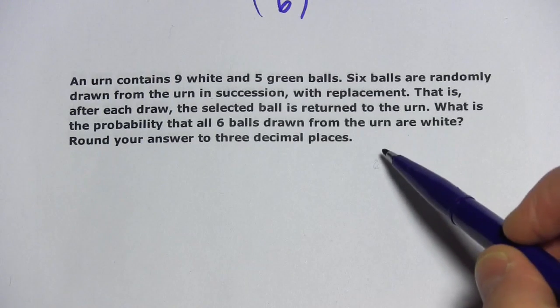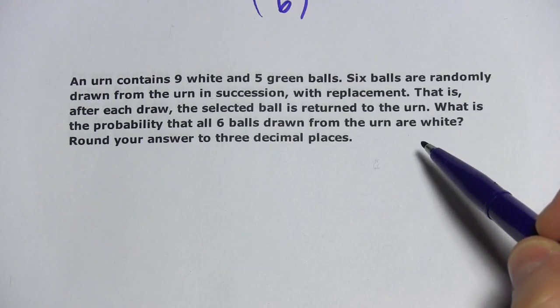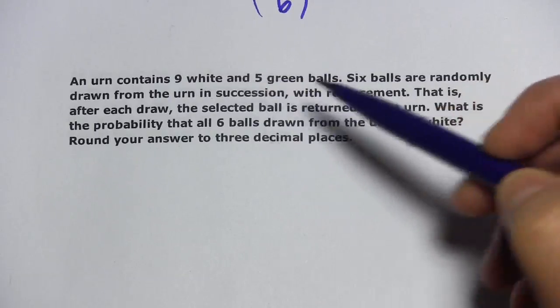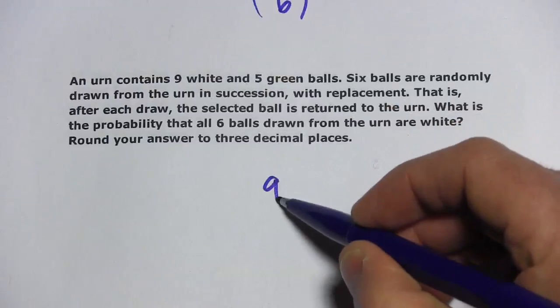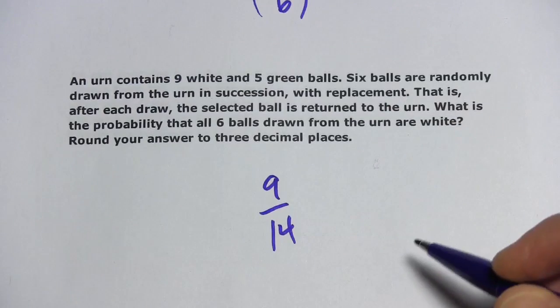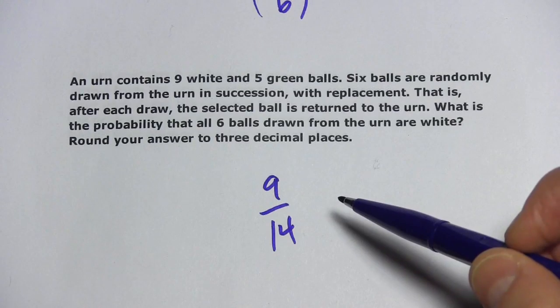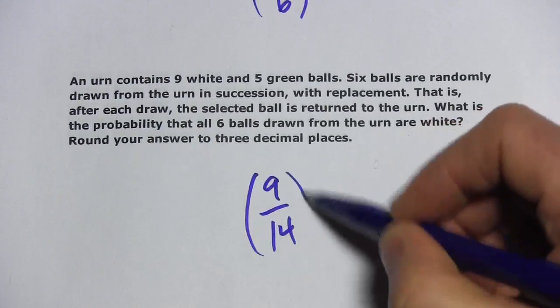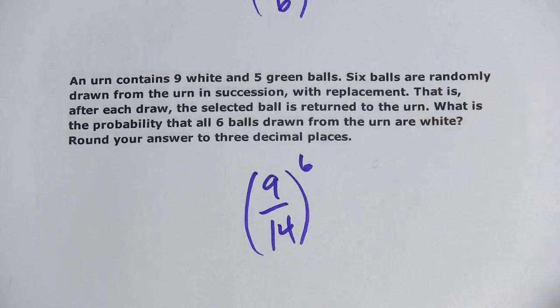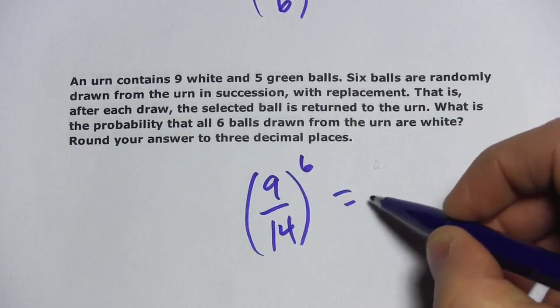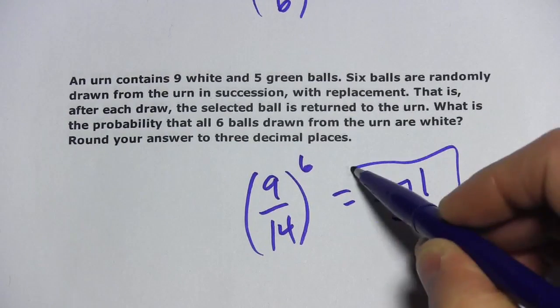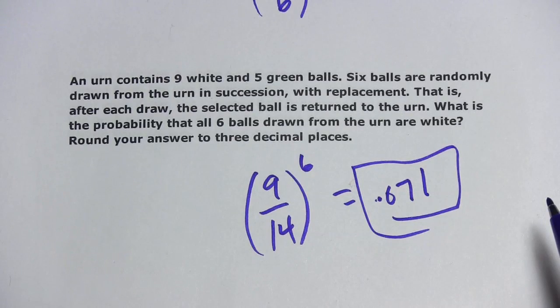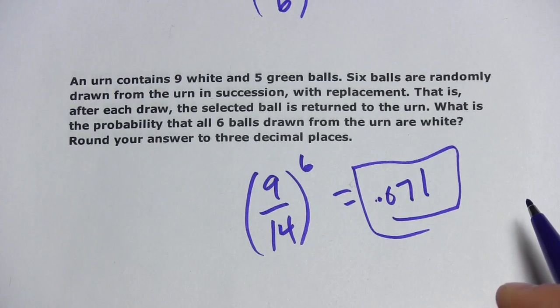The way we want to think about this is: what's the probability that one ball drawn out is white? You have nine white and five green, that's a total of fourteen. There are nine out of those fourteen chances to get a white ball, so that would be nine over fourteen. Since we're throwing that ball back in every time, we can just take this to the sixth power. So this should be nine-fourteenths to the sixth power. I'm getting about 0.071. So that's a little bit of work with the probability of draws with replacement.